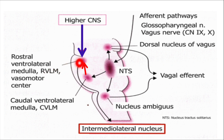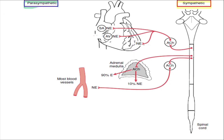The vasoconstrictor area or RVLM stands for rostral ventrolateral medulla. This name indicates its position — it is located in the superior or rostral portion of the ventrolateral medulla. This area sends sympathetic impulses to the heart and blood vessels, that is, to arteries, arterioles, and veins, as you can see — these are the sympathetic nerves emerging from this vasoconstrictor area.